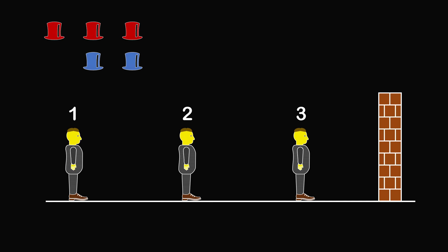Each prisoner can have either a red or blue hat, which is one of two choices, and there are 3 prisoners. So there will be 2 times 2 times 2, which equals 8 possibilities.